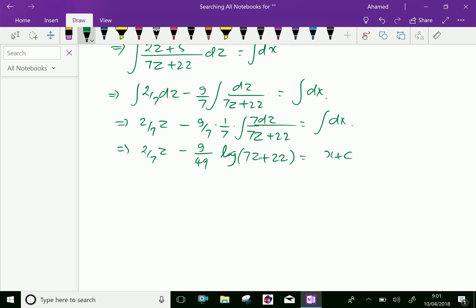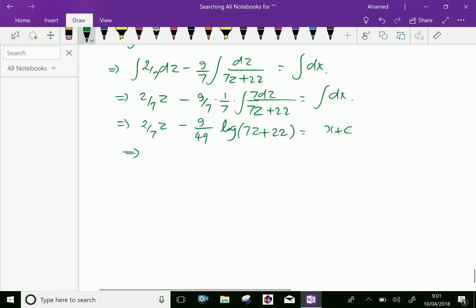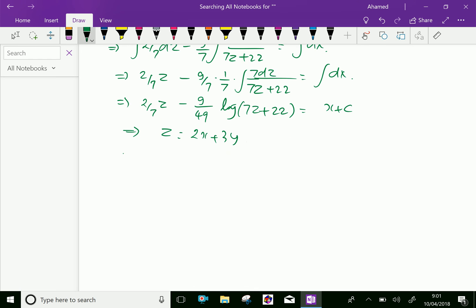Now substitute the value of z, that is z equals 2x + 3y. We will get (2/7)(2x + 3y) minus (9/49) log of modulus (14x + 21y + 22).